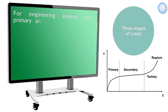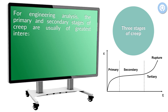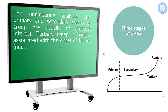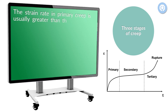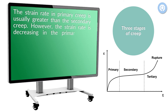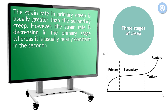For engineering analysis, the primary and secondary stages of creep are usually of greatest interest. Tertiary creep is usually associated with the onset of failure and is short-lived. The strain rate in primary creep is usually greater than in secondary creep; however, the strain rate is decreasing in the primary stage, whereas it is nearly constant in the secondary stage. Also, primary creep occurs in a shorter time period than secondary creep.